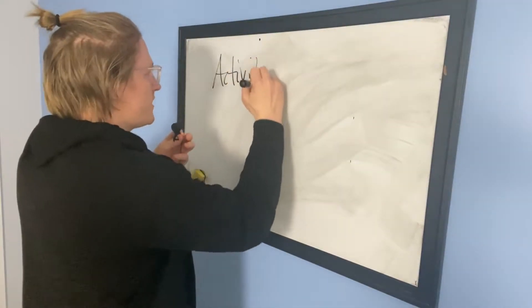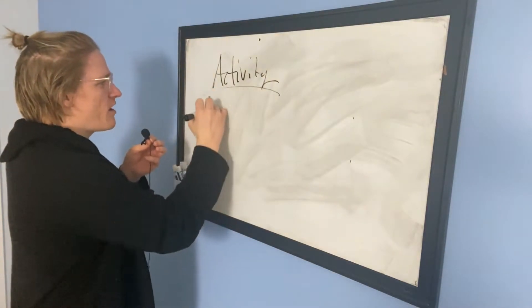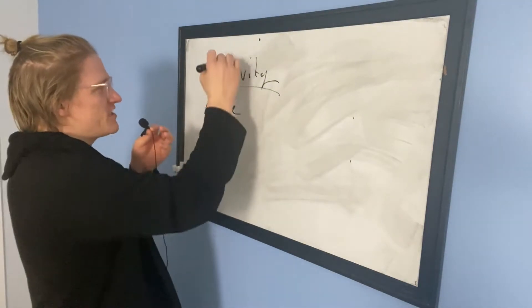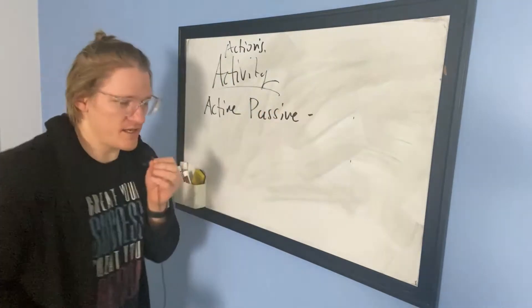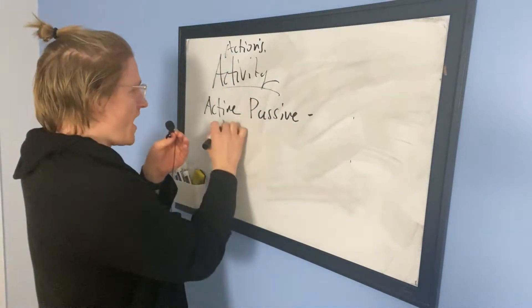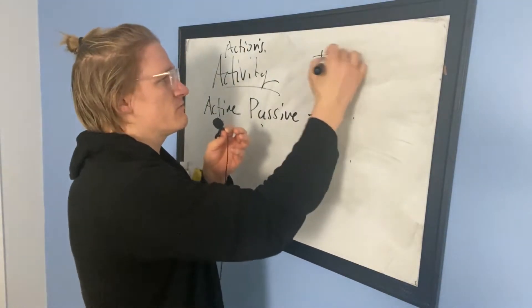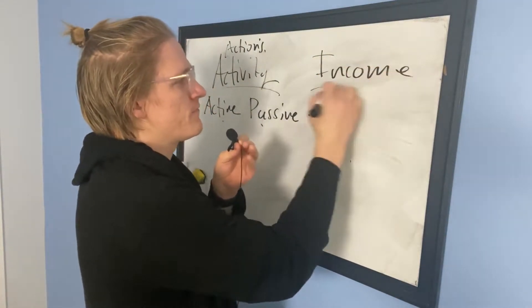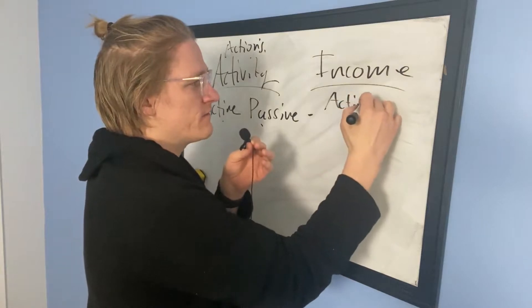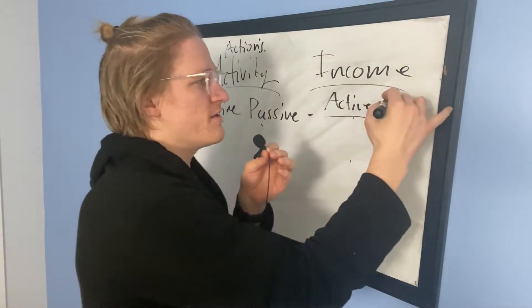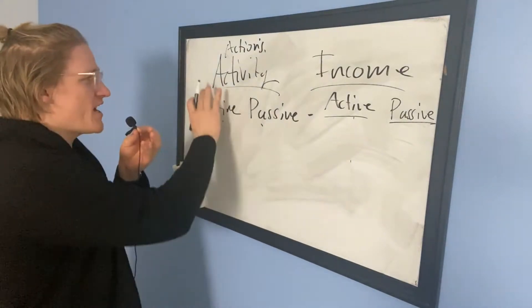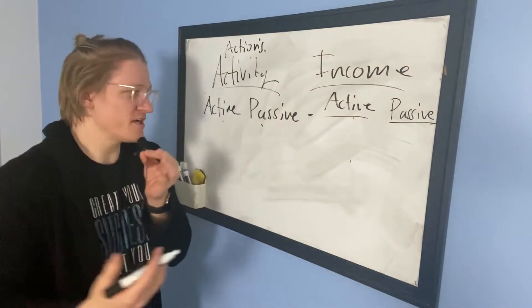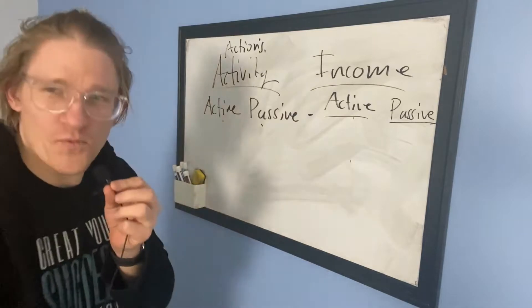In order to understand my strategy for time management in network marketing, you need to understand there are two different types of activity. There's active activity and there's passive activity. This also maps to income — you have active income and then you have passive income. The activity refers to the actions you're going to take on a daily basis.